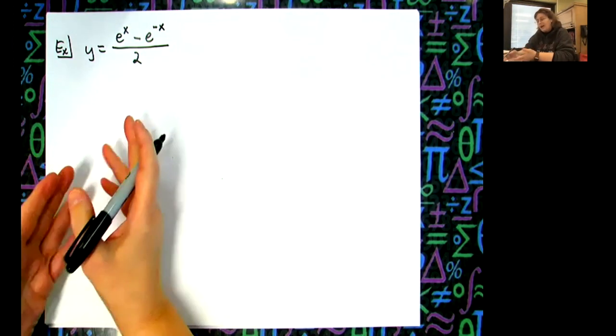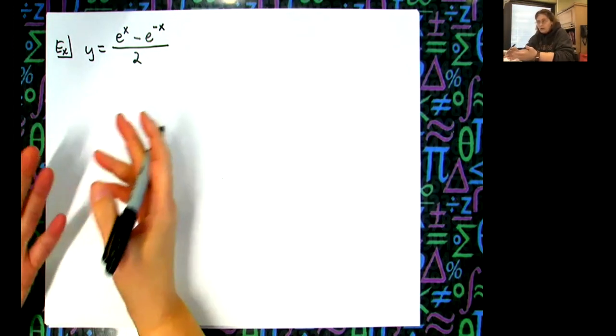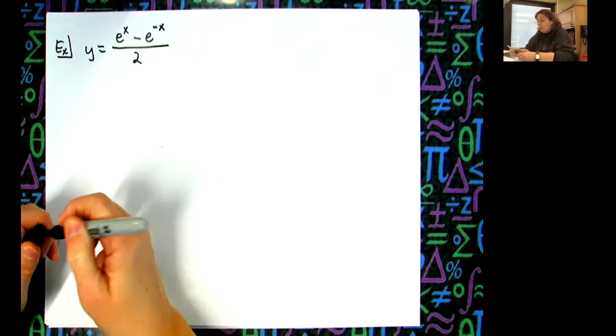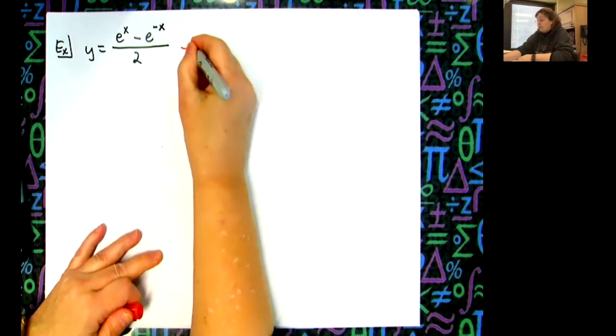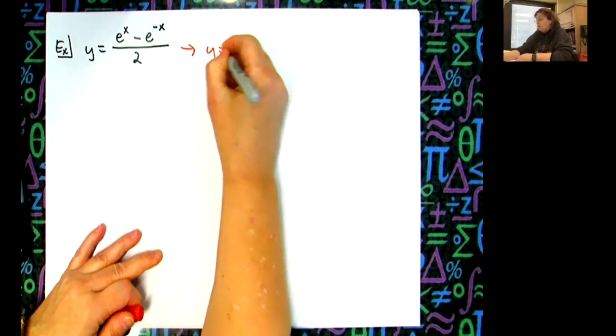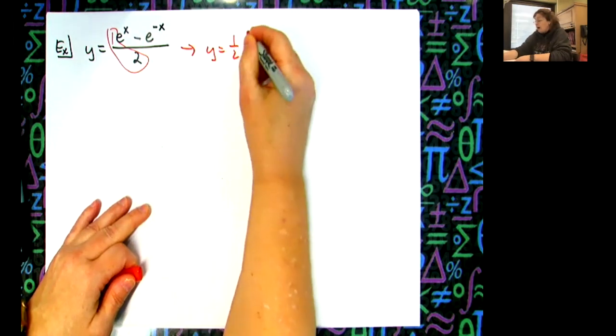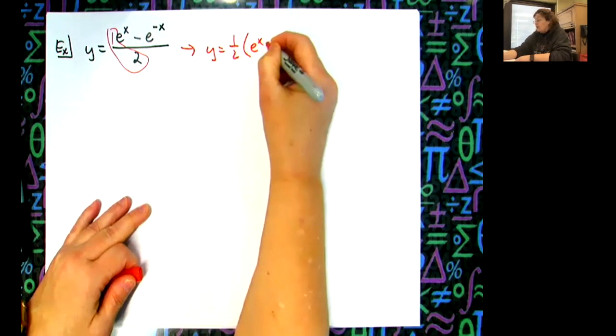Some of you might like quotient rule, and with the two in the bottom that's a constant, so it might not be too bad. But wouldn't it be easier if I rewrote this as y equals one half times e to the x minus e to the negative x?